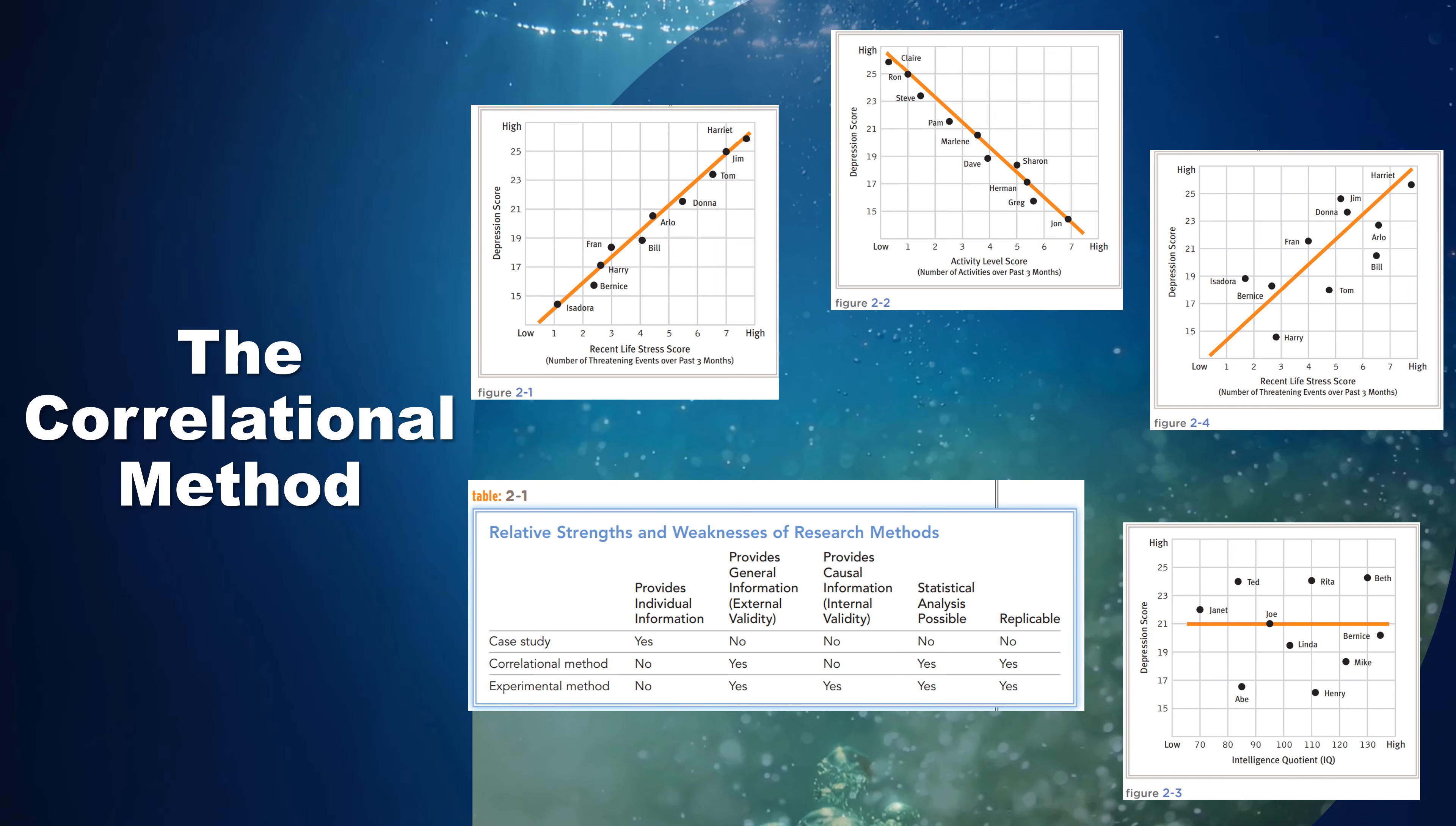The graph provides a visual representation of your data. Here, notice that the data points all fall roughly along a straight line that slopes upward. You would draw the line so that the data points are as close to it as possible. This line is called the line of best fit.